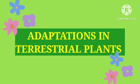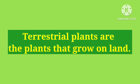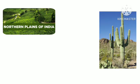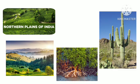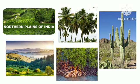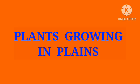Terrestrial plants are the plants that grow on land. They can be further divided into different categories. Plains, deserts, hills, marshy places, and coastal areas are the terrestrial habitats where different types of terrestrial plants can be found.